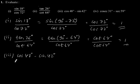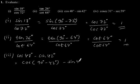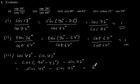The third part: cos 48 degree minus sin 42 degree. Cos 48 degree can be written as cos (90 degree minus 42 degree), minus sin 42 degree. So cos (90 degree minus 42 degree) becomes sin 42 degree, giving sin 42 degree minus sin 42 degree, which is equal to 0.